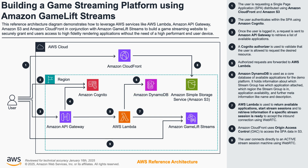Let's say you want to launch one of these applications. First we verify that you have the right permissions. Once we confirm you are good to go, AWS Lambda functions handle all the orchestration needed to get your streaming session ready.